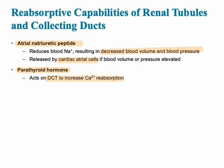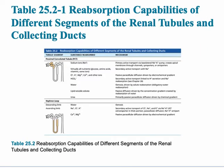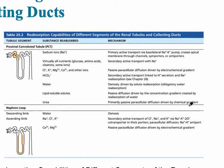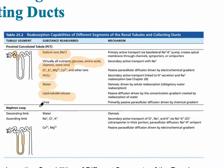The next slides do a great job of summarizing what goes on in the various regions of the renal tubule. Looking more closely at the proximal convoluted tubule, about 80% of all sodium ions are reabsorbed in the PCT. Virtually all nutrients — glucose, amino acids, vitamins, and some ions — are reabsorbed there, as well as various other ions, some bicarbonate, water, lipid-soluble solutes, and urea.